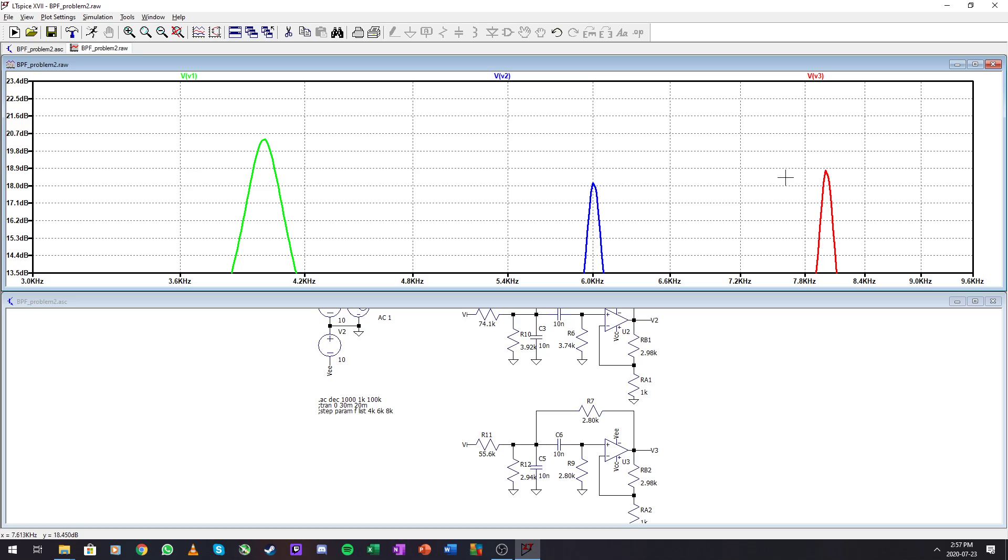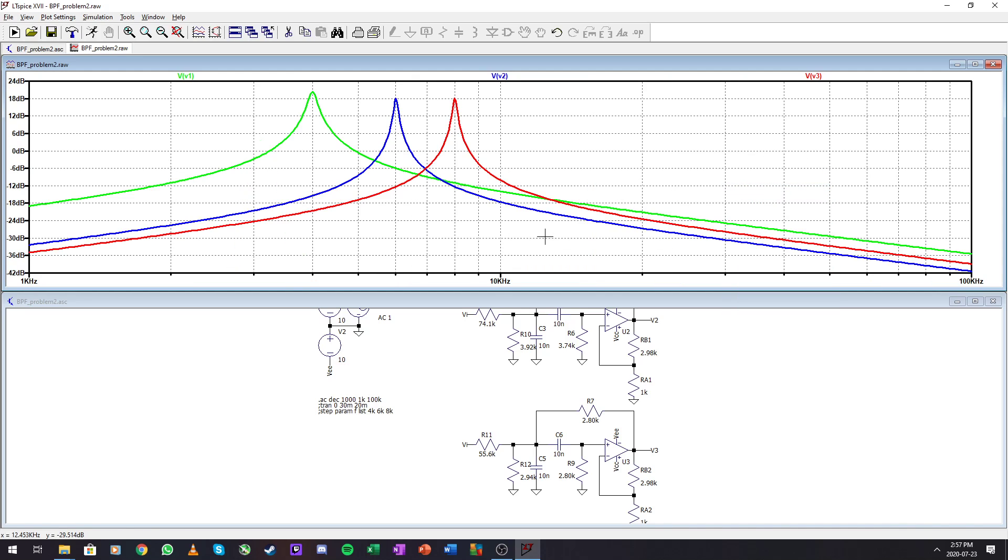But they are quite spot on on the values where we want them. So there is our three bandpass filters of a Q of 100 each.